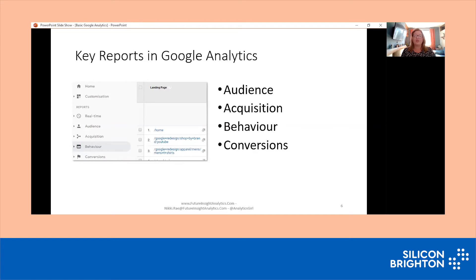Acquisition is channel information — the channel is the word we use to describe how somebody got to your website. Were they coming through organic search, via email, via another website, or by clicking your domain name straight in? Behaviour tells us which pages people looked at on your site and how they interacted with that content. And the fourth main report is conversions, but I'm not going to go into this because to set up conversions we need to do some customisation, which we're not covering in this deck.